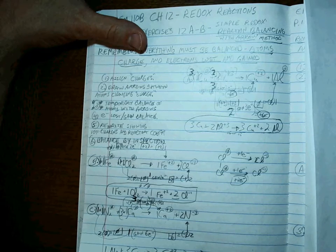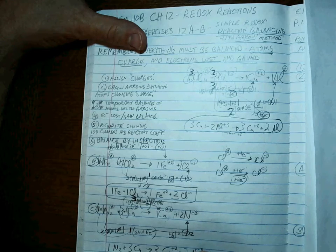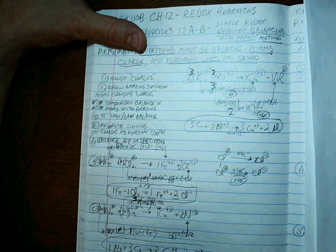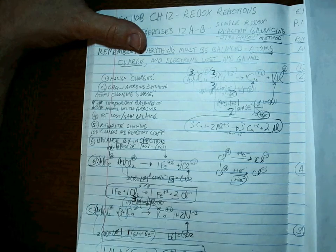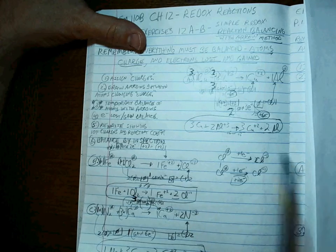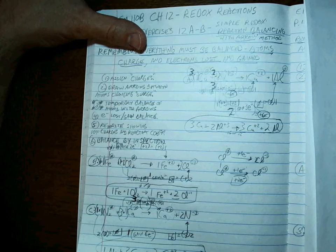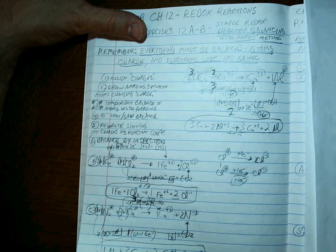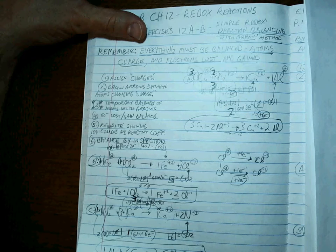Everything balances out — zero charge total on the left, zero charge total on the right. This is the balanced equation. This is the Arrow Method for the simple problems. It's an important tool — know these six steps off by heart. If you don't like this method, try the next video. Practice up and good luck.